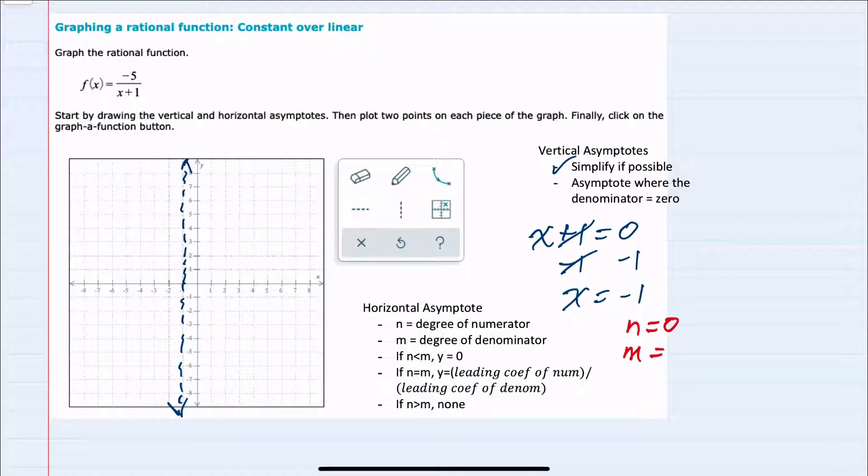And m, for the denominator, we have a single x. So that is degree one. So our n is smaller than m, meaning our horizontal asymptote is y equals zero. y equals zero is on top of the x axis.